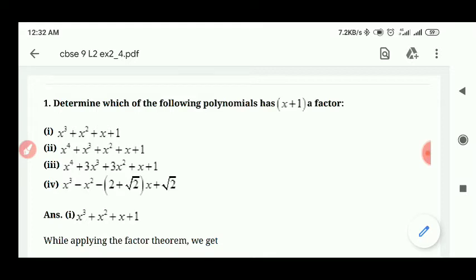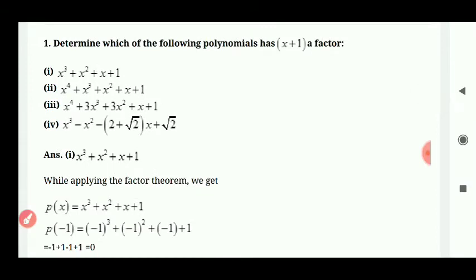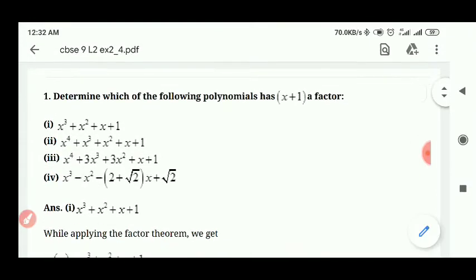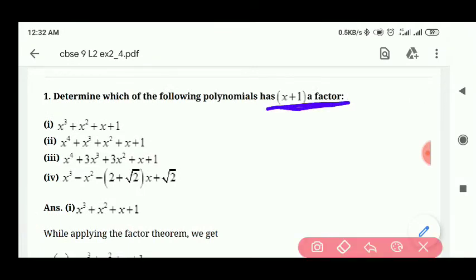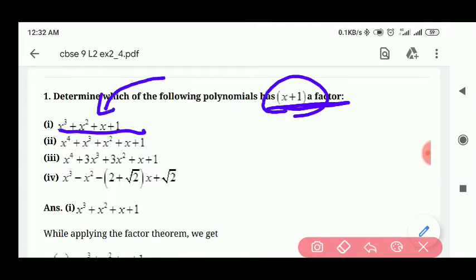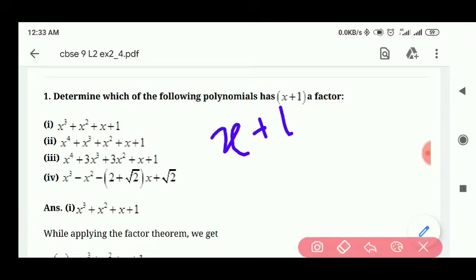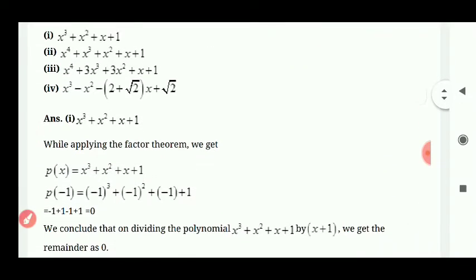x plus 1 factor है तो हम लोग इसको कैसे solve करेंगे — इससे पहले वाली exercise में भी हमने remainder theorem और factor theorem apply करके answers find out किए थे। अगर x plus 1 को factor prove करना है तो जो equation है, जब हम इसकी value substitute करेंगे तो answer हमेशा 0 आना चाहिए। x plus 1 को equate करना पड़ेगा 0 से, और 1 shift हो जाएगा — तो x is equal to minus 1 आ जाएगा।